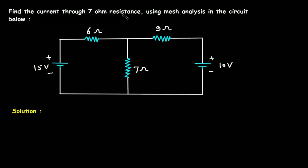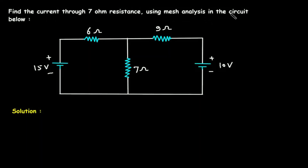Find the current through the 7 ohm resistance using mesh analysis in the circuit below. In this circuit, we have to find the current through this 7 ohm resistance.